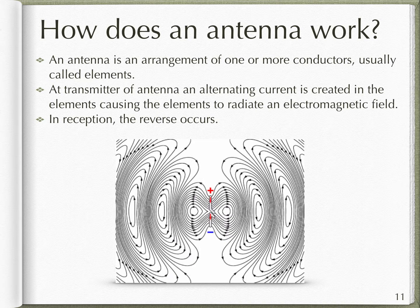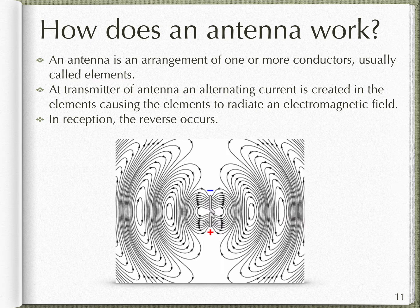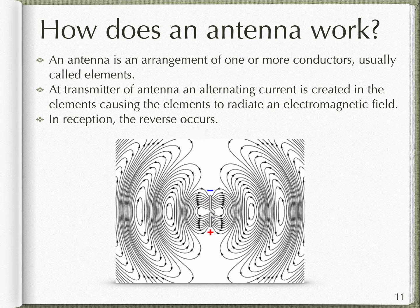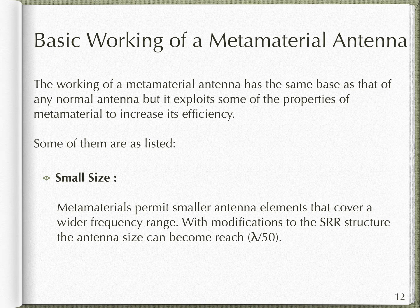An antenna is an arrangement of one or more conductors, usually called elements. In a transmitter, an alternating current is created in the elements which causes them to radiate electromagnetic fields. In reception, these fields are received and the reverse process occurs. The working of a metamaterial antenna is similar to that of a normal antenna — it just exploits some of the properties of metamaterial to increase its efficiency, like small size.